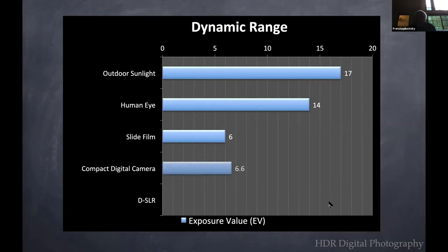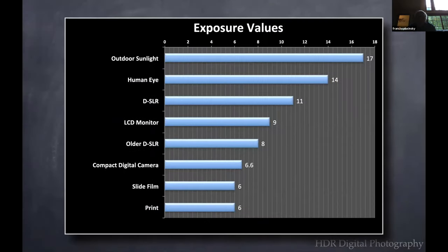Digital cameras at that time, about 10 years ago, were about 6.6. DSLRs were about eight. Today's digital cameras are a lot better — they have an exposure value range of about 11. But remember that an LCD monitor, like an iBook, only has about nine exposure values, and the older digital cameras were about six.